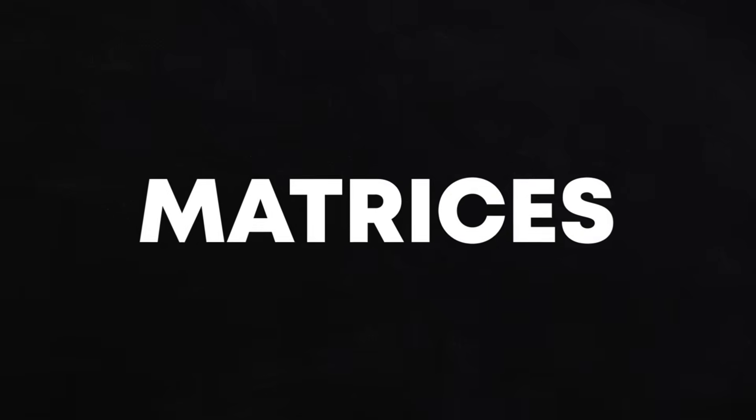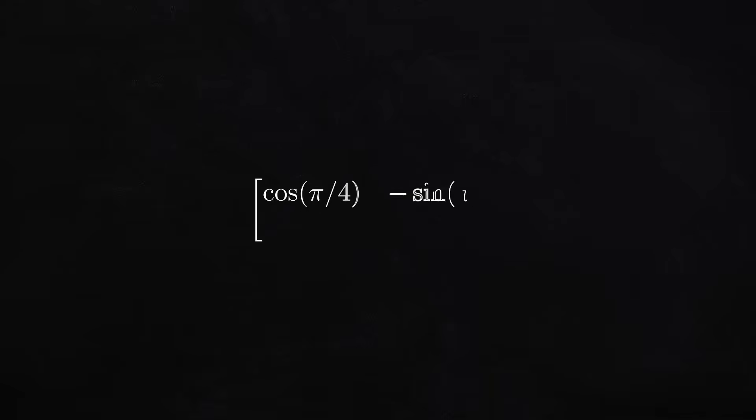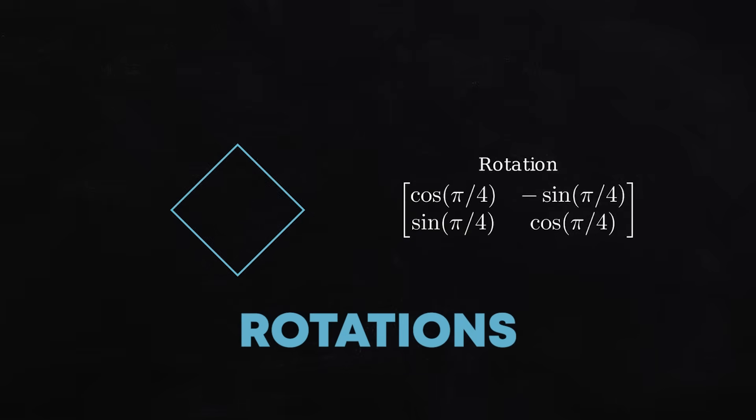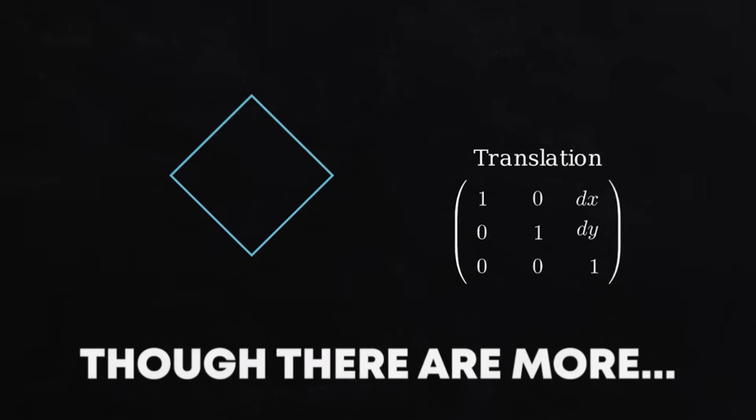Another incredibly important concept in linear algebra is matrices. Matrices are two-dimensional arrays of numbers which, when they multiply a vector, implement a linear transformation. Linear transformations are things like rotations, shears, and translations, though there are more.